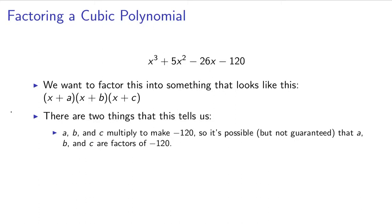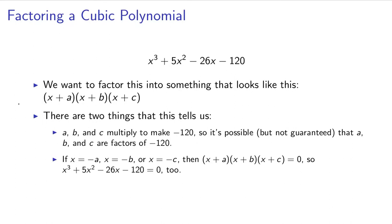So it's possible, it's not guaranteed, but it's possible that a, b, and c are factors of negative 120. The reason why it's not guaranteed is because this polynomial may not have integer roots. It may have non-rational or maybe not even non-real roots. But whenever we need to factor something, we usually want to try out integer roots. And generally speaking, in these kinds of classes, you will probably have integer roots.